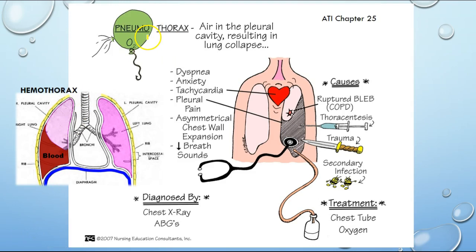Pneumothorax versus hemothorax: one is air, one is blood. Treatment is via chest tube and oxygen. There is a separate short video that gives a rundown on chest tubes. For testing purposes, you need to understand complications associated with chest tubes, so please review that video.